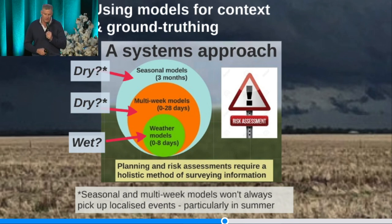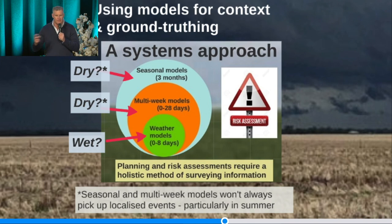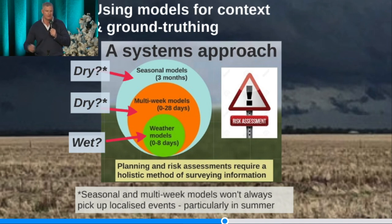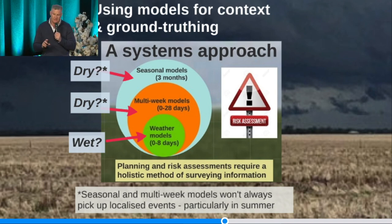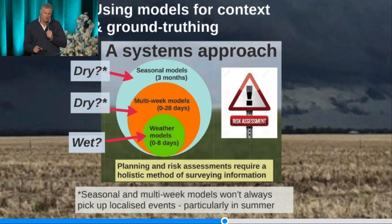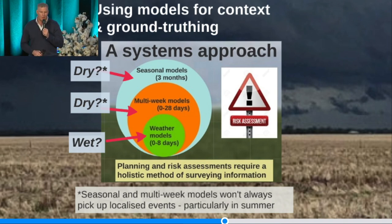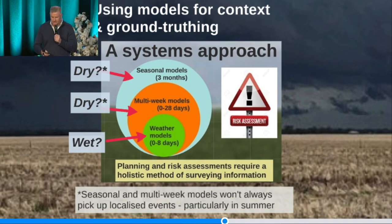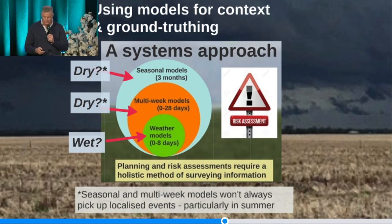At the moment, we've got a dry seasonal outlook and a dry multi-week outlook. So that 100 mm rain event in 16 days' time — what's likely to happen? It's probably going to fizzle out to some degree, given the background conditions are that dry. That won't always be the case, particularly in the winter-spring period. That sort of systematic holistic approach works quite well. The seasonal and multi-week models won't pick up weather events such as east coast lows and tropical cyclones all that well, so handle with caution at certain times of year.